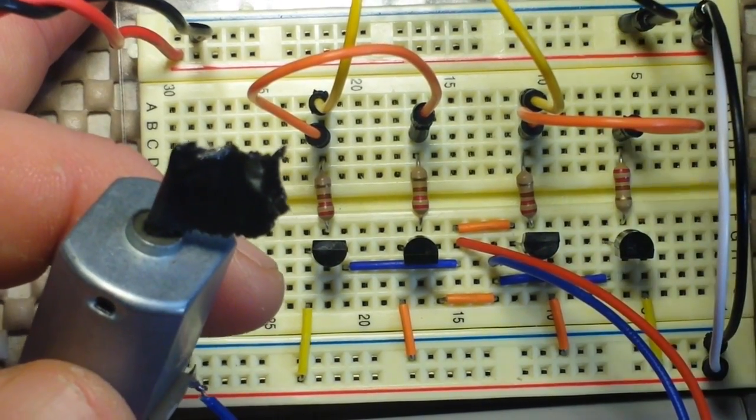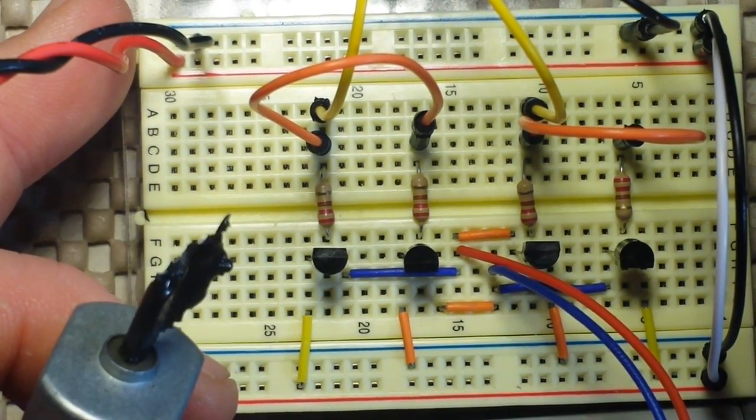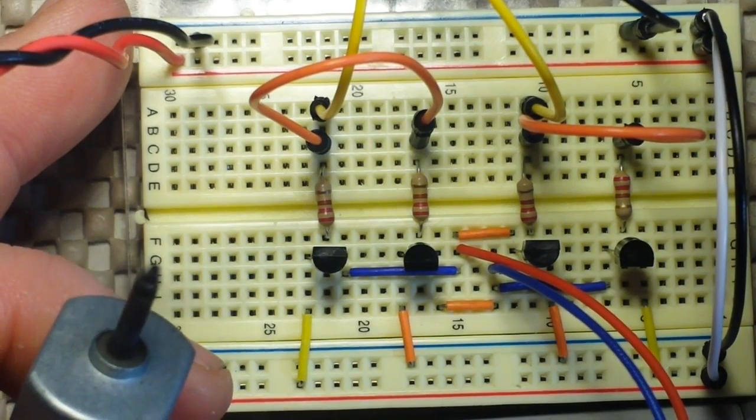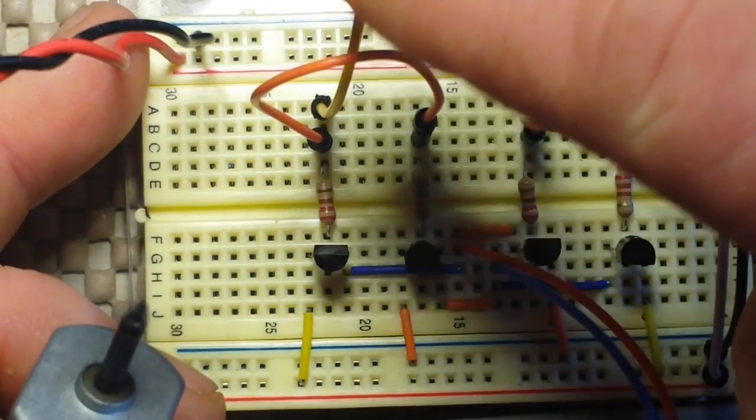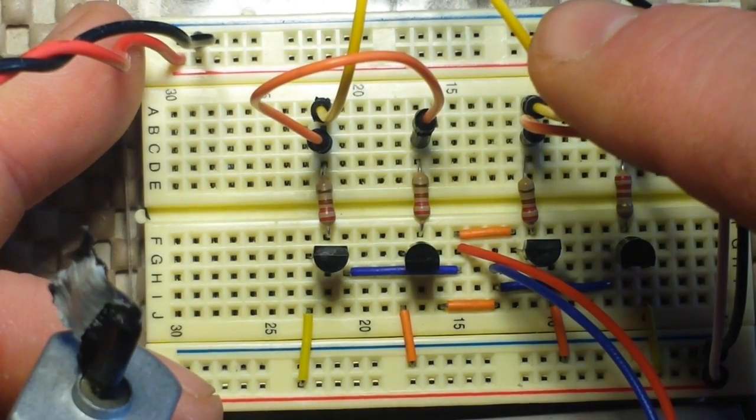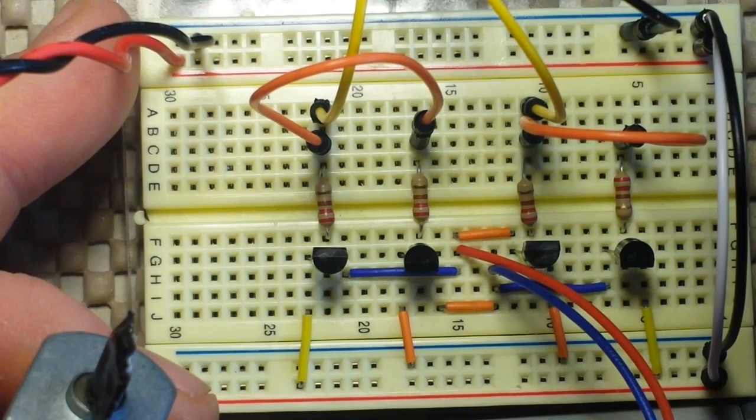So let's power this up and take a look. One, two, in one direction. One, two, in the other direction. So we're simply writing a high to one line and a low to the other, then to switch directions we write high to this one and low to that one.